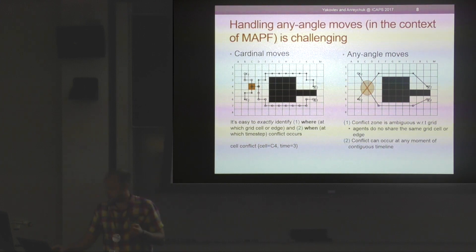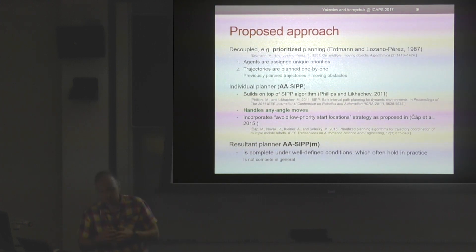To attack the above-mentioned challenges, we suggest using a decoupled approach, namely we rely on prioritized planning, which is a well-known concept in robotics. It's when all agents are assigned unique priorities and the trajectories are planned sequentially one by one. When we're finding a trajectory for an agent, we treat all high-priority agents as moving obstacles.